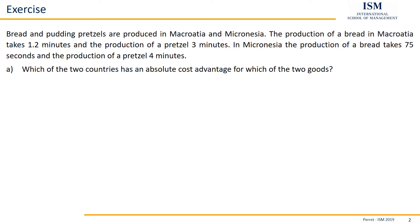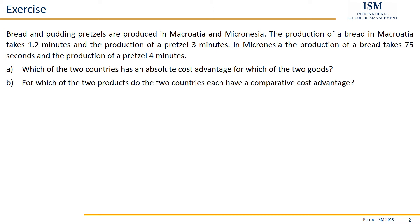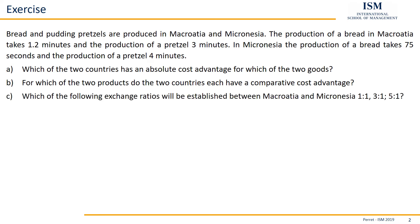Our first task: which of the two countries has an absolute cost advantage for which of the two goods? Part B: for which of the two products do the two countries each have a comparative cost advantage? And C: which of the following exchange ratios will be established between Macroasia and Micronesia — 1 to 1, 3 to 1, or 5 to 1?